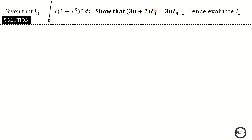Going back to the proof, you have I of n and I of n minus one. I of n has been given, but what is I of n minus one? You simply come to I of n and replace the n with n minus one. So I of n minus one is the integral from zero to one of x times (1 minus x cubed) all raised to the power n minus one. For me to have the power n minus one it simply means I have differentiated the function (1 minus x cubed) raised to the power n.